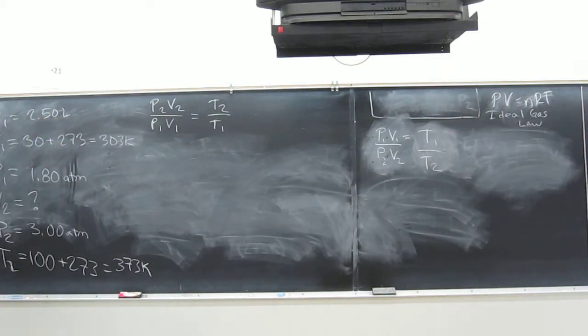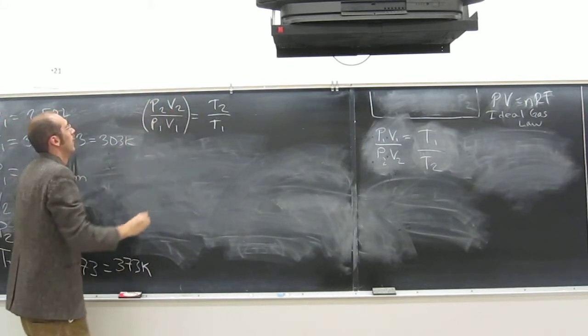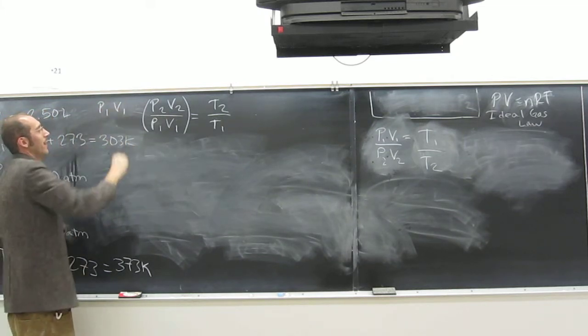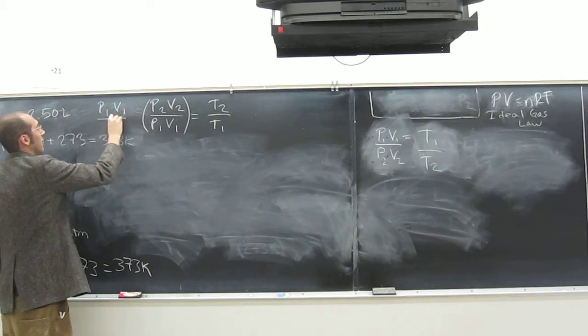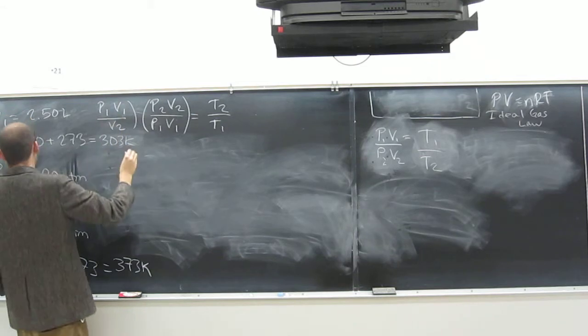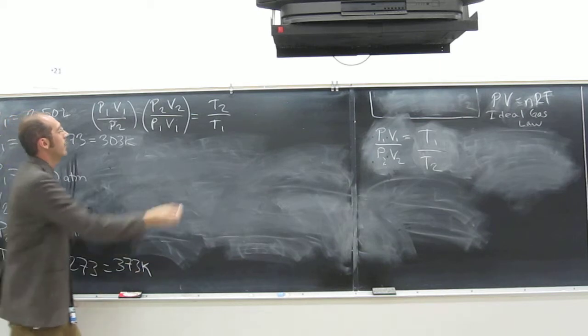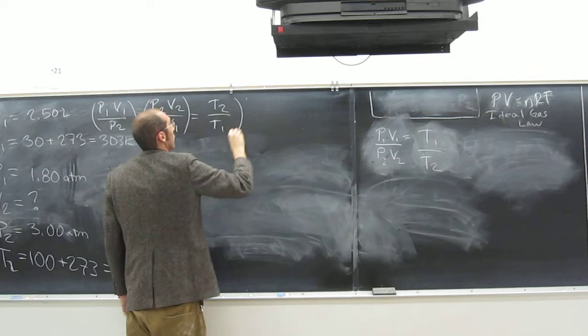So, is the variable isolated? No. What do we got to do to it? We can do it all in one fell swoop if we want to. We can multiply it by P1V1 and also divide it by P2. And if we do that to that side, we're going to have to do it to this side, right?